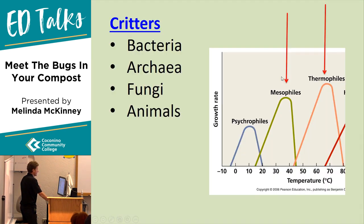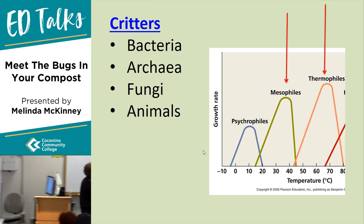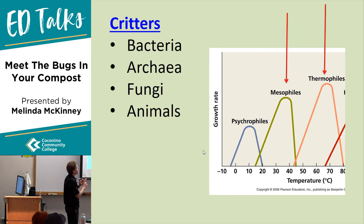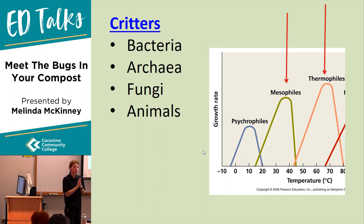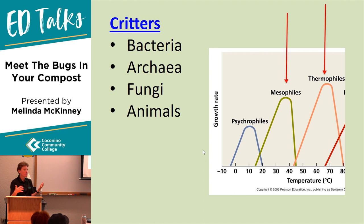Now the critters — my favorite part. There are bacteria and archaea, single-celled organisms; fungi, which can be single-celled like baker's yeast or multicellular like mushrooms; and animals. Ninety-five percent of animals on the planet are arthropods, and most of those are insects. These are the visible players we're looking at today — they help with the initial chopping, shredding, and breaking down process and are great for local ecosystem biodiversity.